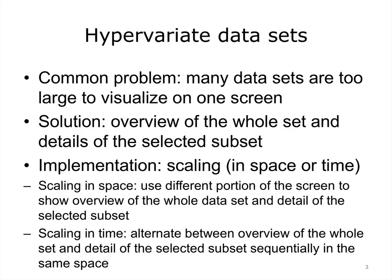As we mentioned earlier, real-world datasets are usually quite complex. They include multiple variables and are often very large. This creates a problem for information visualization, as it is often impossible to fit all data on the same screen. A common solution is to include a combination of the entire dataset visualized in a very condensed way and a view of a subset of data in greater detail.